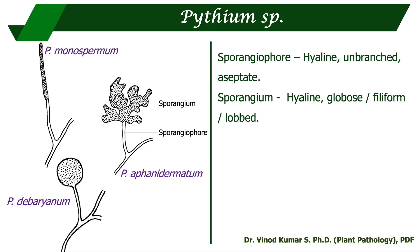There are several Pythium species: Pythium aphanidermatum, Pythium debaryanum, and Pythium monospermum. In all of them, the sporangiophores are hyaline, unbranched, and aseptate, and they resemble hyphae. Regarding the shape of the sporangium, it depends on the species: in Pythium debaryanum it is globose, in Pythium aphanidermatum it is lobed, and in Pythium monospermum it is filiform.